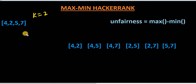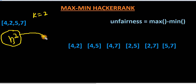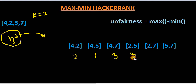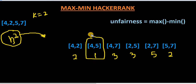For each element the for loop increments and checks the next element — this is basically an O(n²) approach where we generate subsets and then check their values. For the subset {4, 2} the unfairness is 2; {4, 5} gives 1; {4, 7} gives 3; {2, 5} gives 3; {2, 7} gives 5; {5, 2} gives 2. By inspection, the minimum unfairness is 1.